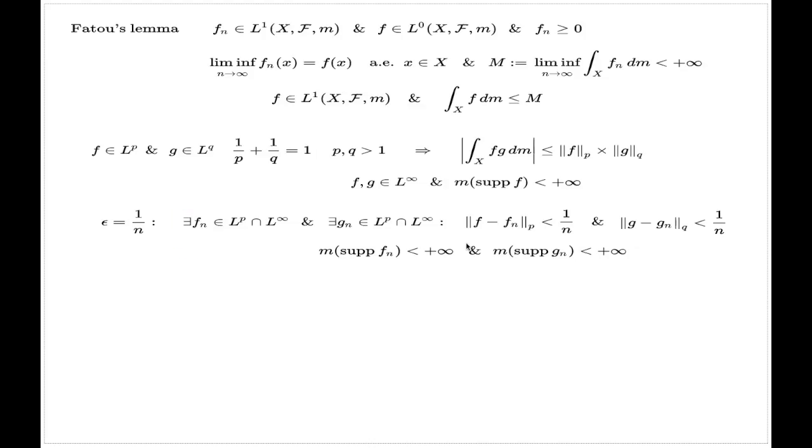There was another consequence in the approximation technique, which says that if you have the approximation in the norm of Lp class, then the same approximation gives you the limit in the measure topology. So I claim now from my previous comments that the sequence fn converges to f in measure topology, and the sequence gn converges to g in measure topology.